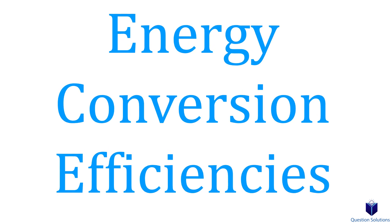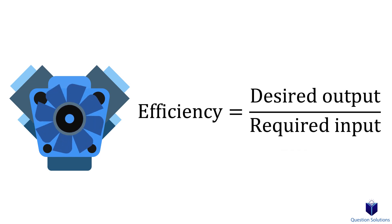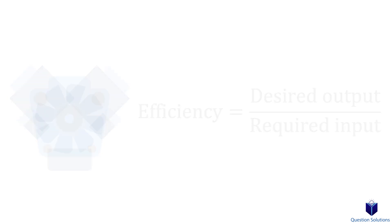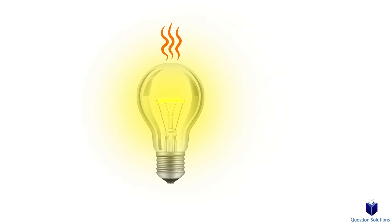Let's talk about efficiency. You've probably heard things like 'this motor is 85% efficient' or 'this car engine is 35% efficient.' In simple terms, efficiency is the desired output divided by the required input. For example, if we take an incandescent light bulb, only a small percentage of the electrical energy it uses produces light — most of it is dissipated as heat. So our desired output is light and the required input is electricity.